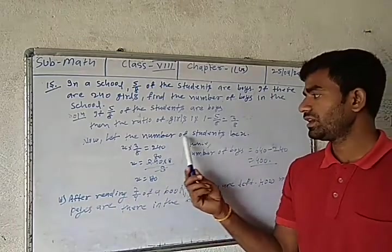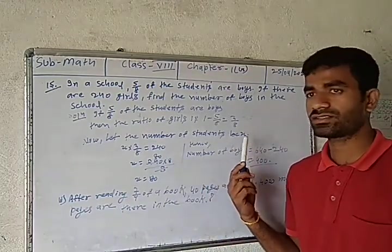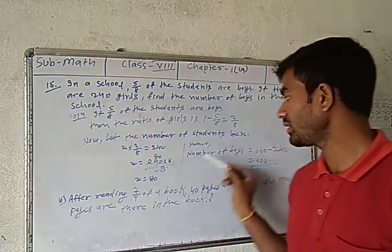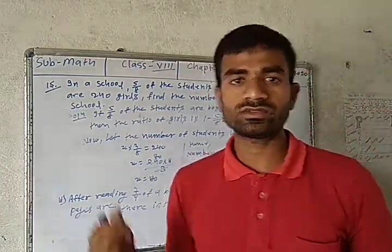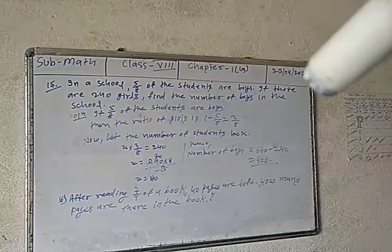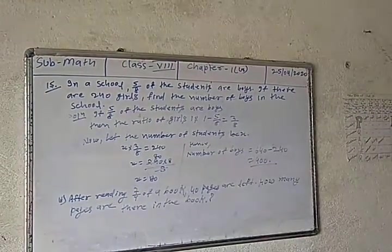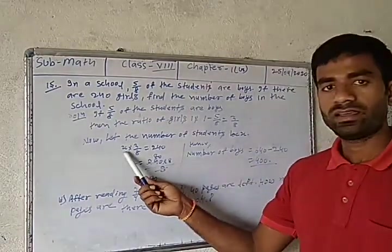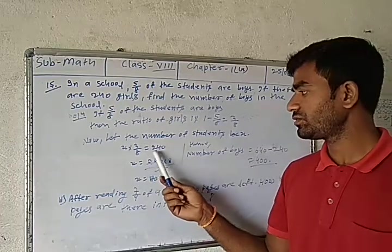Now, let the number of students be x. Then 3/8 of x equals 240.